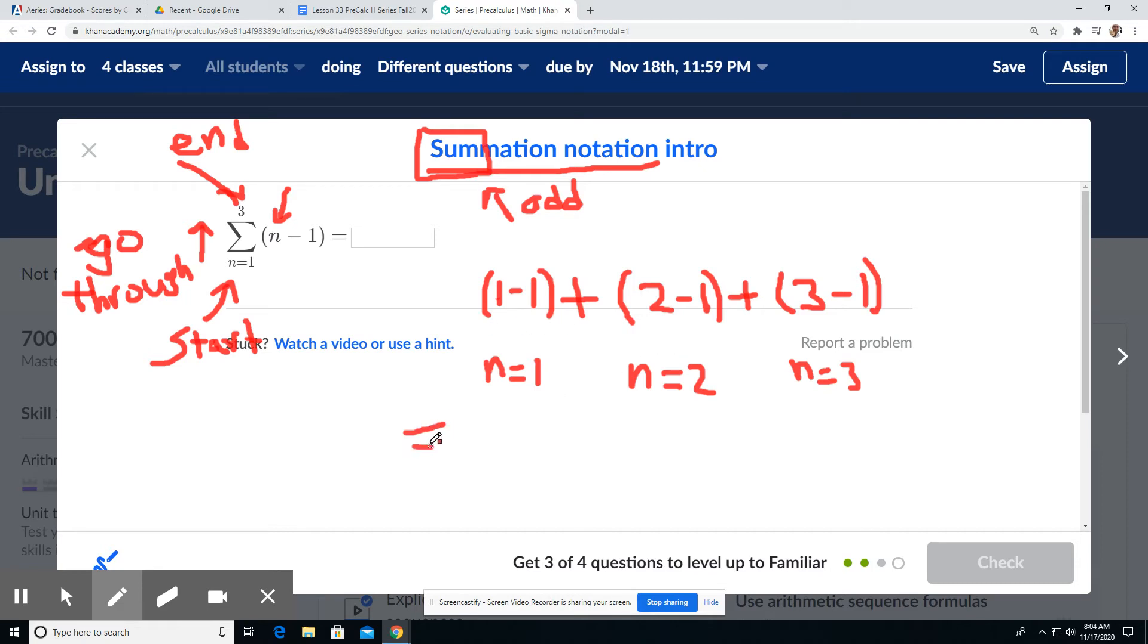So that would give us 1 minus 1 is 0. 2 minus 1 is 1. 3 minus 1 is 2. So I got the answer of 3 here. So this function equals 3.